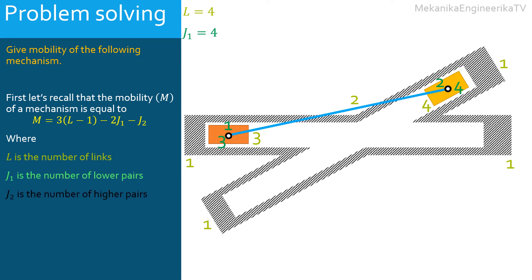In this mechanism, there are no higher pairs. All connections are either rotating pairs or translating pairs, which are lower pairs. Thus, J2 is equal to 0.